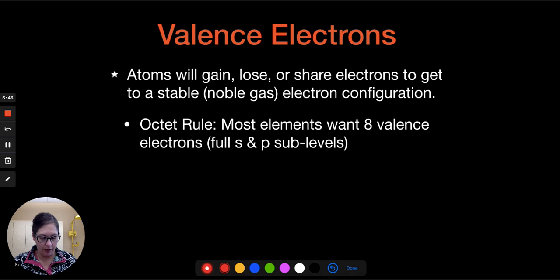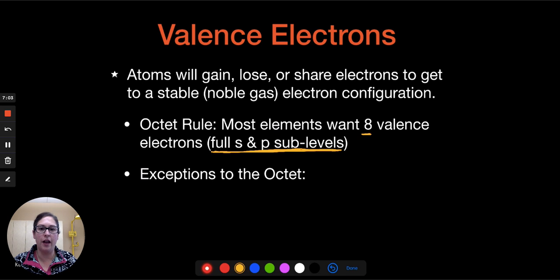And the octet rule is that whole idea that most elements want to have 8 valence electrons. And that's where we were counting up those S and P sublevels. So those valence electrons that we were counting up, if there's 8 of them, it has a full S and P.